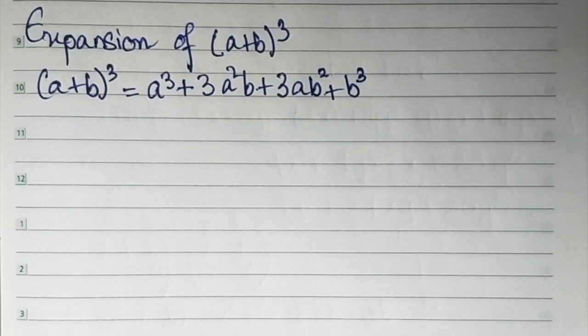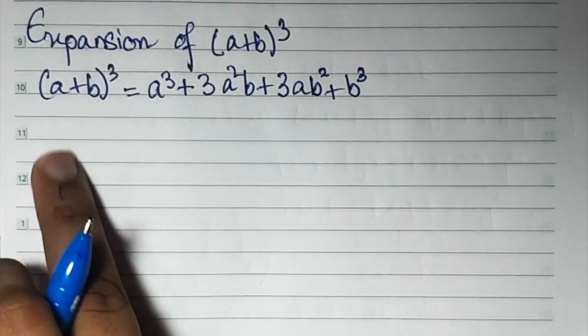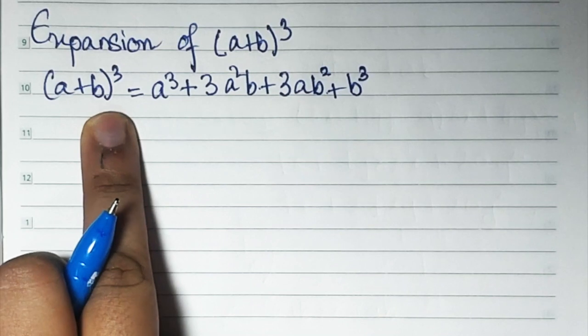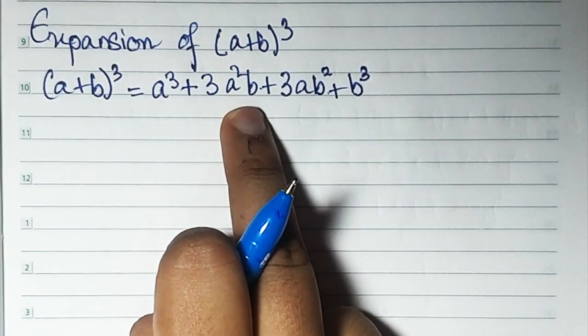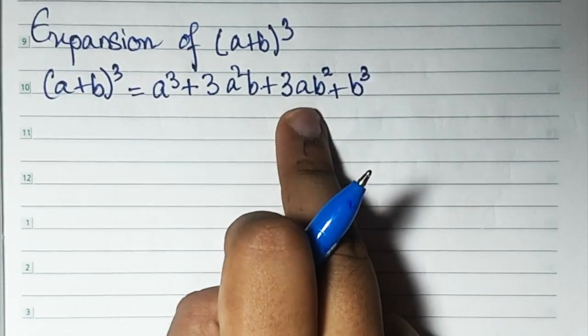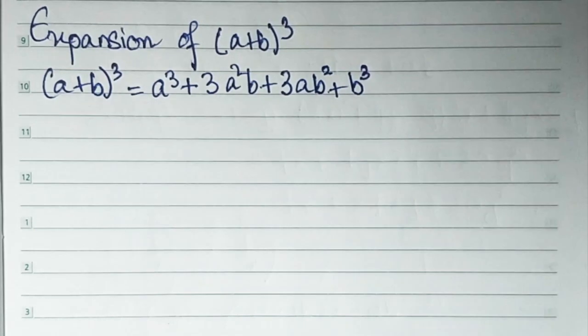Now we'll study the expansion of (a + b)³. The formula for (a + b)³ is a³ + 3a²b + 3ab² + b³.